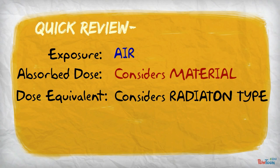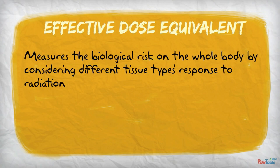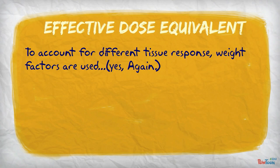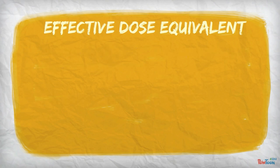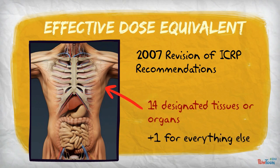There is yet another measurement of radiation effect on the body that we will now consider. That measurement is the effective dose equivalent. This measures the biological risk on the whole body by considering that different tissue types respond differently to radiation exposure. It also accounts for radiation to only part of the body versus uniform radiation to the entire body. In order to account for the different tissue responses, weight factors are used. These weight factors for tissue response were determined and published by the ICRP. The most recent revision to the recommendations of the ICRP was in 2007. It groups the body into 14 designated tissues or organs, plus one more to include everything else. A weight factor is published for each of these 15 designations.